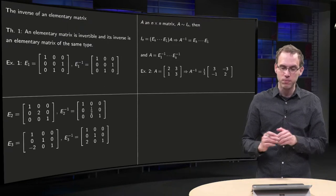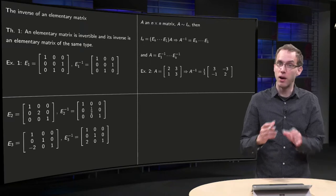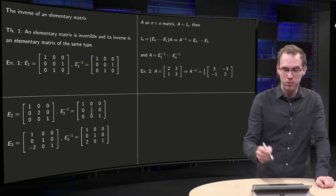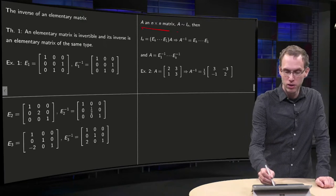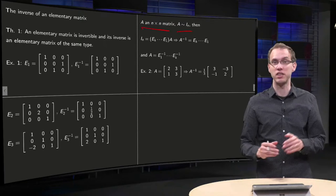Now, what happens? How can you apply this in general? What happens if you have A, an n times n matrix, that you can row reduce to the identity matrix?